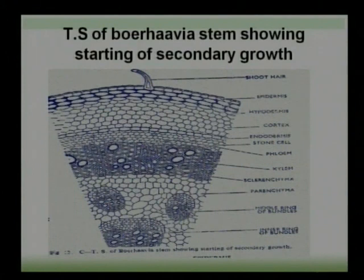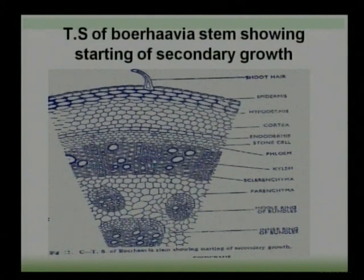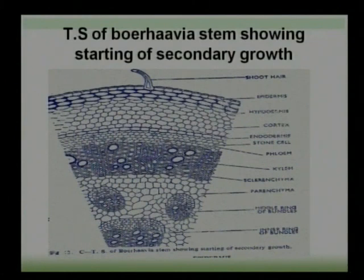This is the diagram showing the TS of Borhevia stem at the starting of secondary growth. The outer layer is called epidermis — it is a single layer, totally covered by cuticle. Next is cortex, differentiated into two regions: outer and inner. The outer region forms the hypodermis, which is made up of colenchymatous cells in three to five layers. The inner cortex is made up of parenchymatous cells.